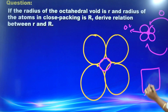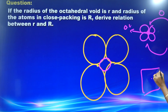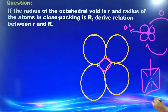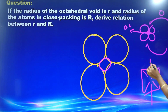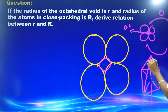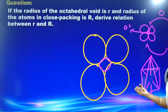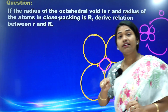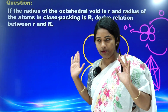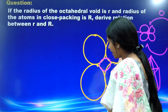Four atoms in one plane, one above the plane, one below the plane. The atom above the plane forms four faces and the atom below forms four faces — total eight faces. That's why the name 'octa' is given — octahedral void.